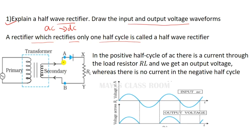The half-wave rectifier has a transformer with a diode. During the positive half-cycle, the diode is forward biased and current flows through the load resistance, delivering output.